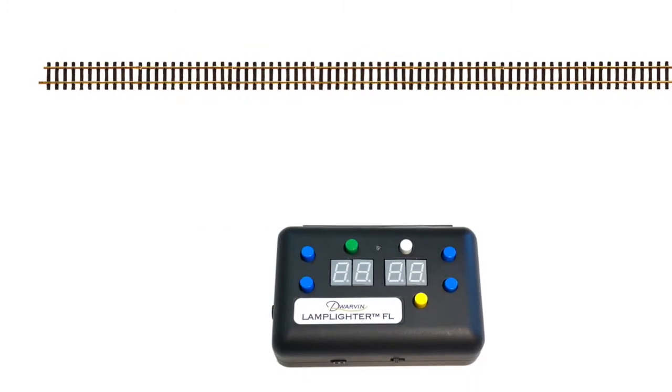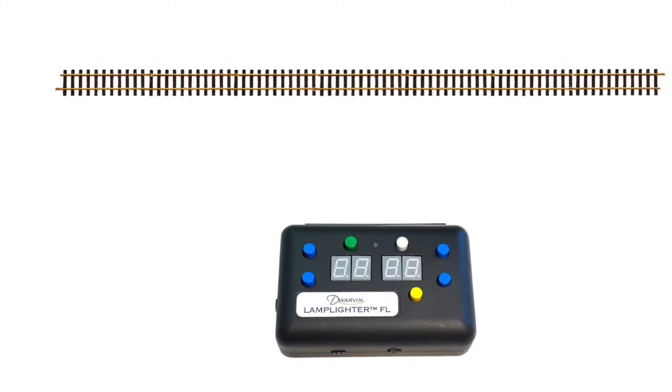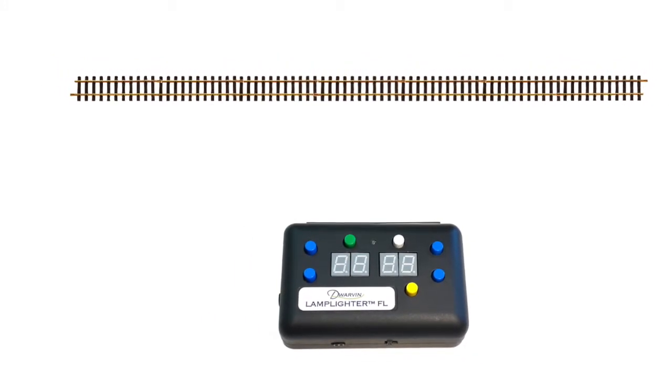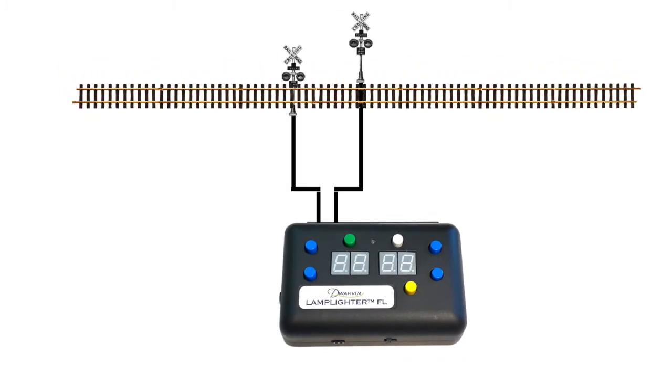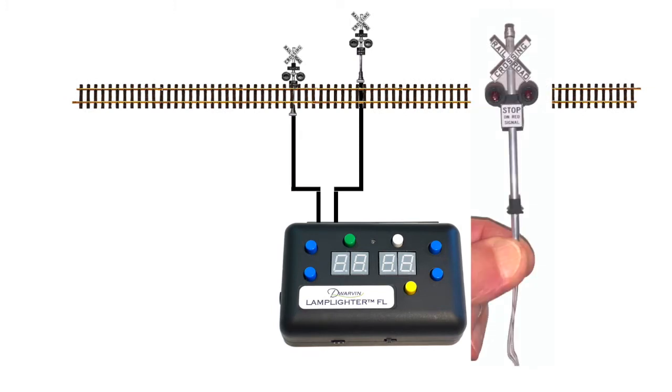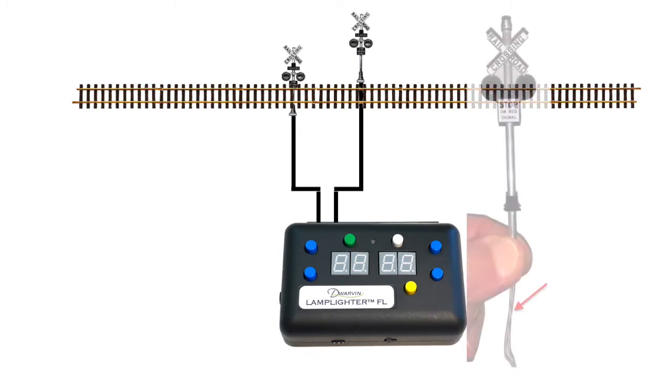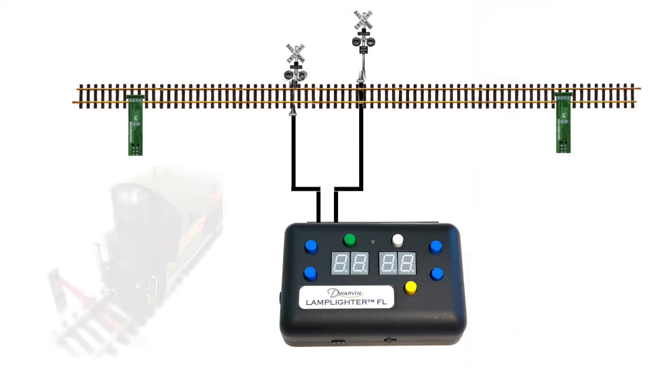At the center of the fully integrated railroad crossing system is of course the lamplighter flasher unit. To that can be attached the railroad crossings which come with fibers attached already and they just plug into the light outputs of the flasher unit and then of course there are detectors.